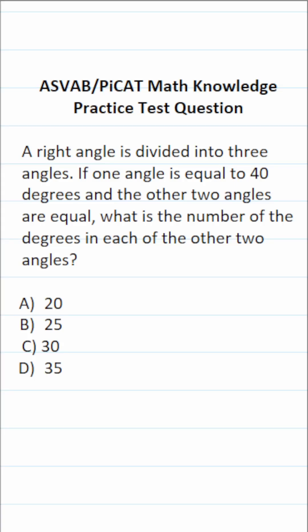This math knowledge practice test question for the ASVAB and PICAT says a right angle is divided into three angles. If one angle is equal to 40 degrees and the other two angles are equal, what is the number of the degrees in each of the other two angles?